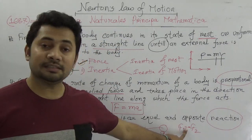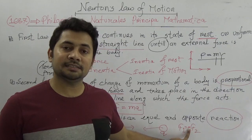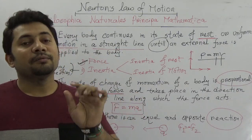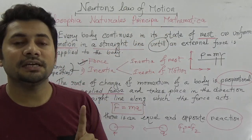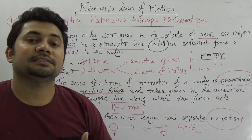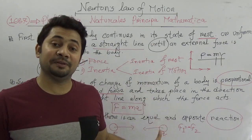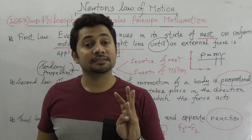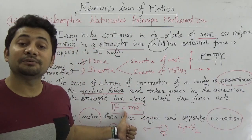According to the third law, F1 equals minus F2. The equal sign expresses that they are the same in magnitude, and the minus sign expresses that they are opposite in direction. In this lecture I only explained the first, second, and third laws of motion by Newton. From the next class I shall be explaining the mathematical applications and how these things can be derived, including what momentum is and how the equation F = MA is derived.